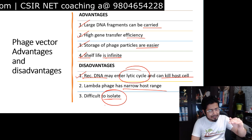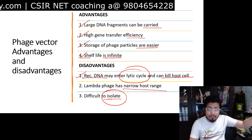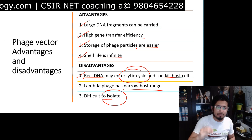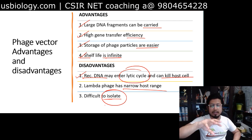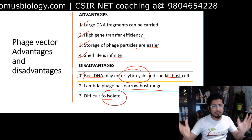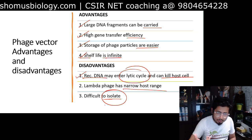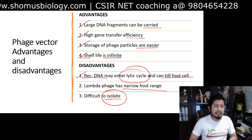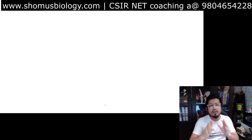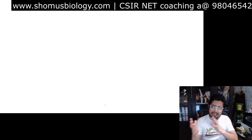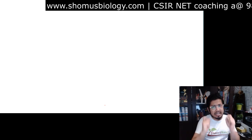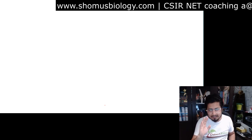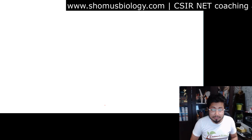When working with a phage vector, we are working across multiple domains simultaneously — the virus, the bacteria as host, and the target gene of interest from a eukaryotic cell. So we are working with eukaryotes like humans, bacteria as prokaryotes, and viruses — that makes isolation one big ongoing disadvantage. The biggest advantage of the phage vector is the large insert size; other than that, the rest of the properties are not as favorable.